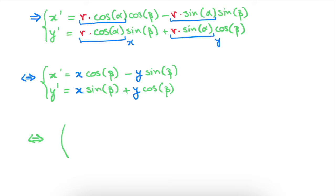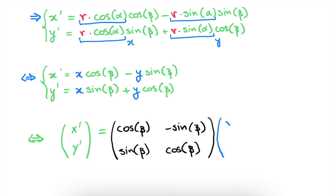This transformation can now be written in matrix form. So we have here the column vector x prime and y prime, and it's equal to the matrix with its components cosine beta, minus sine beta, sine beta and cosine of beta. And this matrix is then multiplied by the column vector x and y. And this matrix is called the rotation matrix for an angle beta. And this is how we derived our rotation matrix.